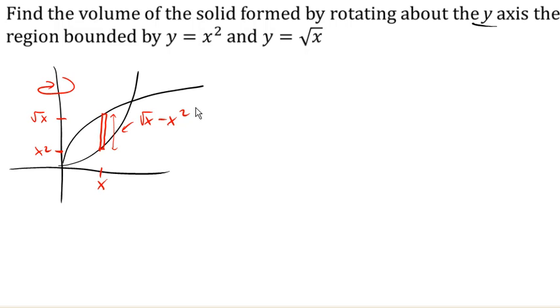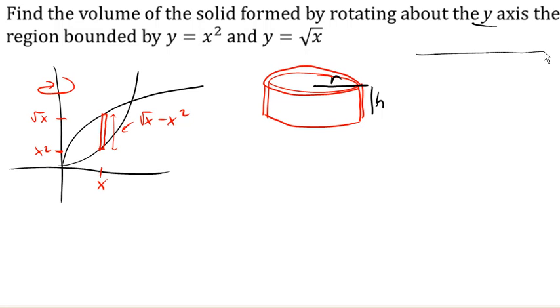When we rotate this, we're going to get that shell. That's that vertical cylinder with just a tiny bit of thickness to it. We need the volume of this shell. It has a radius on the inside and some height here. If you imagine unrolling this, slicing it along the side and rolling it out into a flat slab,